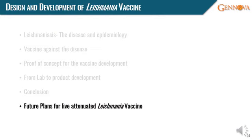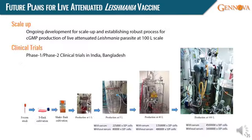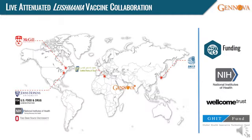For future plans with the live attenuated Leishmaniasis vaccine, we are working on translating our success at the 5-liter scale to 100-liter CGMP scale. We are also planning to start a clinical trial in the endemic region of India and Bangladesh. This collaborative program involves the US FDA, Ohio State University, McMaster University, Johns Hopkins University, NIH, Institute Pasteur in Tunisia, and Nagasaki University, Japan.